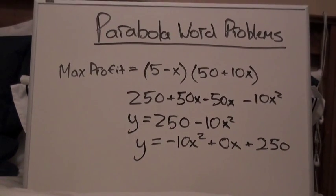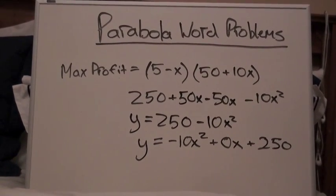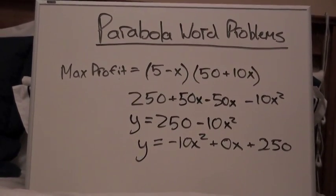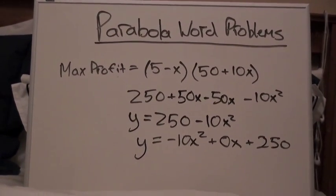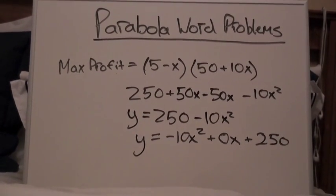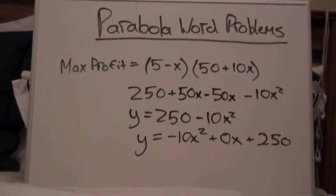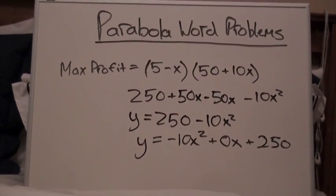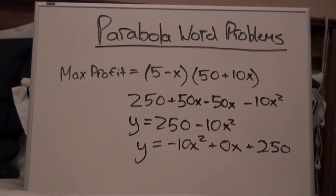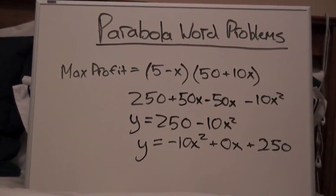So, once we do this problem and foil the problem out, we get 250+50x-50x-10x². This problem then reduces down to y = 250-10x².